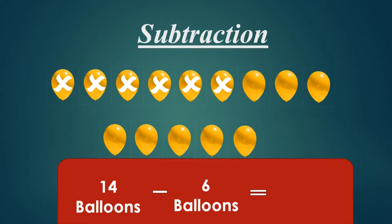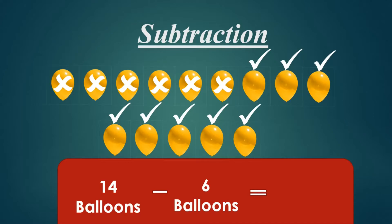Join with me. Here we go: 1, 2, 3, 4, 5, 6, 7, 8. 8 balloons. So 14 balloons minus 6 balloons is 8 balloons.